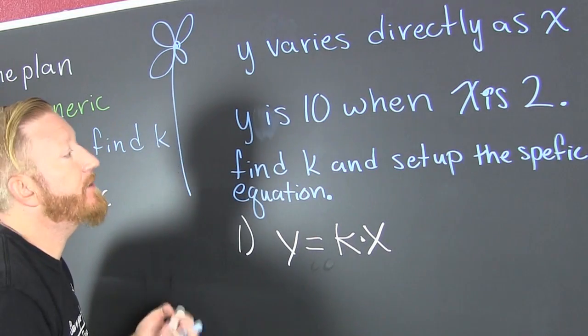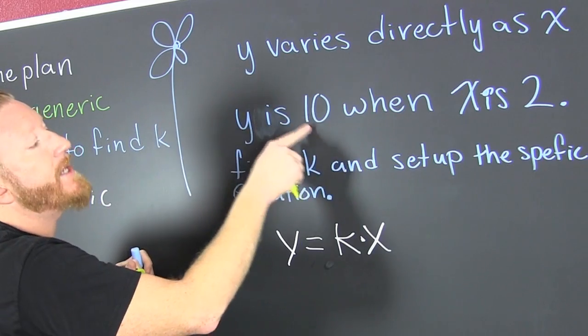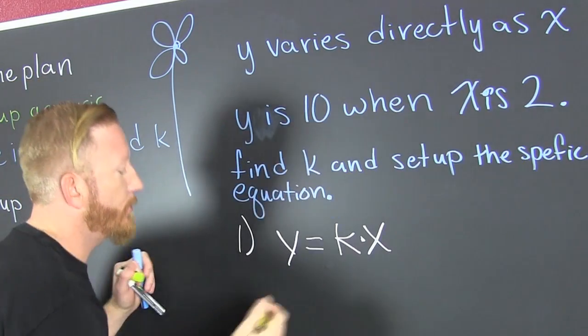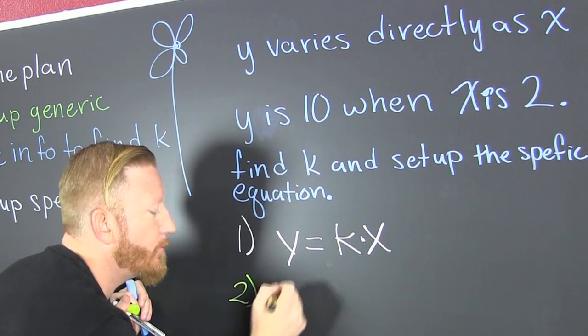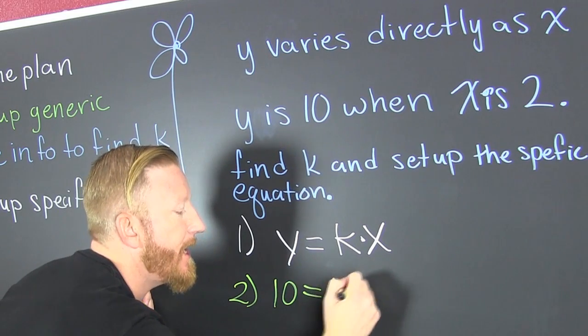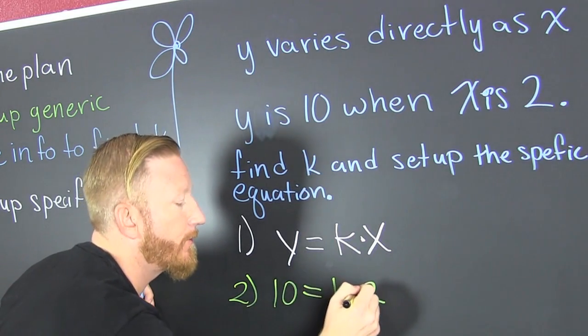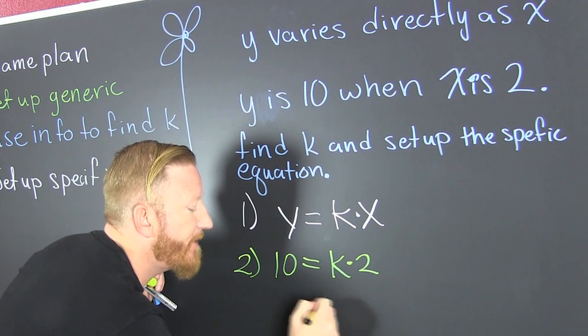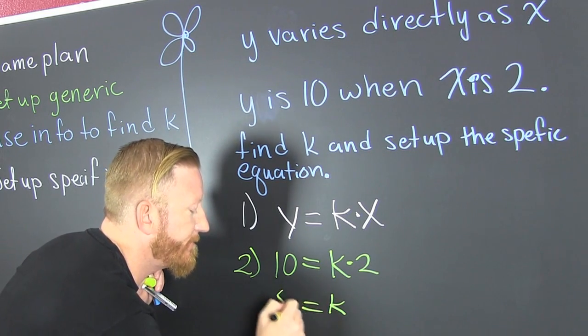So now step two. We use the information in order to find k. Y is 10 when x is 2. So in step two, y is 10 when x is 2. We divide both sides by 2, and we find that k is equal to 5.